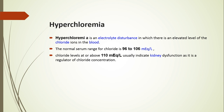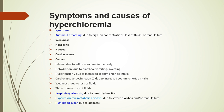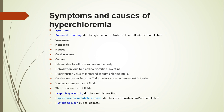Hyperchloremia is when there is excess chloride ion in the body. Symptoms and causes include small breathing, excessive acid production, weakness, headache, nausea, and cardiac arrest. Main causes are edema, dehydration, hypertension, cardiovascular dysfunction, thirst, respiratory alkalosis, hypochloremic metabolic acidosis, and high blood sugar. Thank you for today's lecture; if you have any questions please let me know.